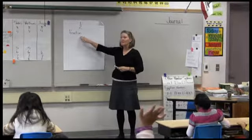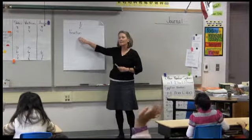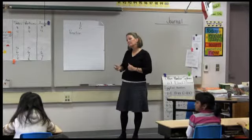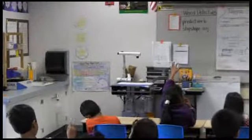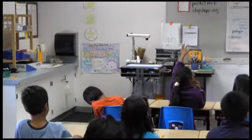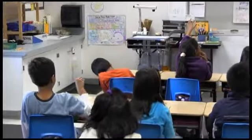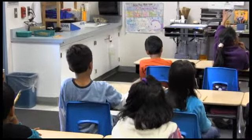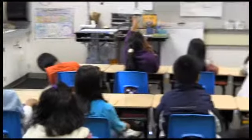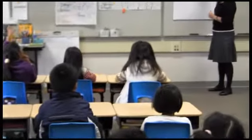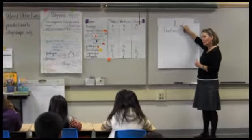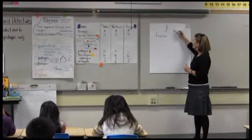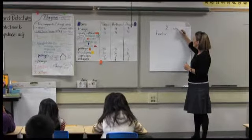Is there someone who would like to build on Aditya's thinking? He thinks that this is called a fraction. Avi? It is called a fraction because when you do a fraction, there's a line between the whole number and the part number. So you're telling me you think this is the whole and this is the part? No, the bottom is the whole and the top is the part.